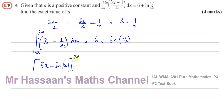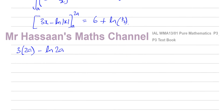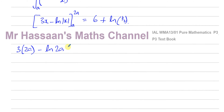That's one of the results we have learned in this chapter. When I calculate that, it's supposed to be 6 plus ln(1/2), and I have to use that fact to find the value of a. I can now substitute 2a and a. So I have 3 times 2a minus ln of the modulus of 2a. They've told us that a is a positive constant, so there's no need for the modulus sign. Minus, and in brackets: 3a minus ln of a.